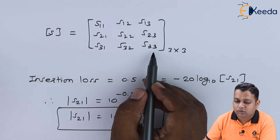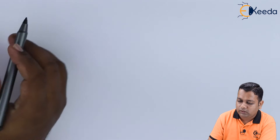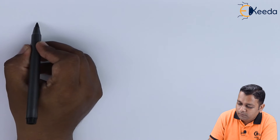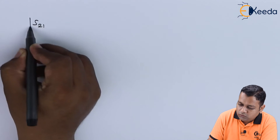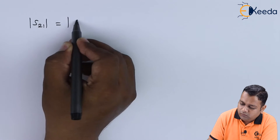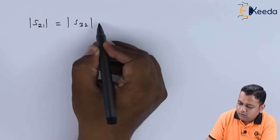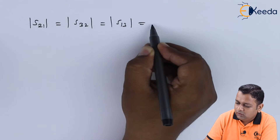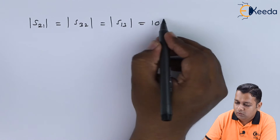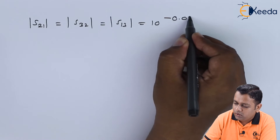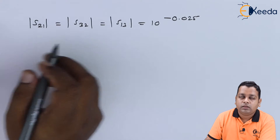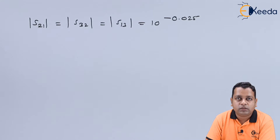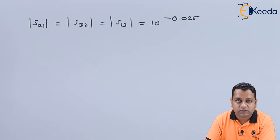So s21 equals 10^(−0.025). In similar fashion, by the symmetry of the circulator, s32 and s13 are equal to the same value: 10^(−0.025). This was determined using the insertion loss value provided in the problem statement.